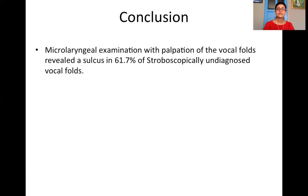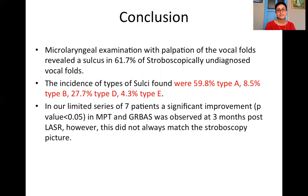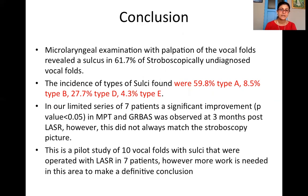In conclusion, microlaryngeal examination with palpation of the vocal folds revealed a sulcus in 61.7% of stroboscopically undiagnosed vocal folds in our study. The incidence of sulci was maximum in type A at almost 60%, followed by type D at almost 28%. In our limited series of seven patients, a significant improvement in maximum phonation time and GRBAS score was observed at three months. However, the stroboscopic improvement seen did not always match vocal improvement. This is a pilot study of 10 vocal folds with sulci operated with LASR in seven patients, and more work is needed to make a definitive conclusion.